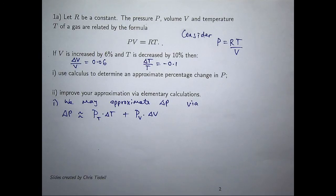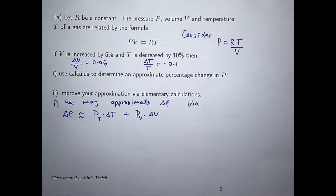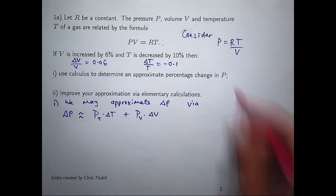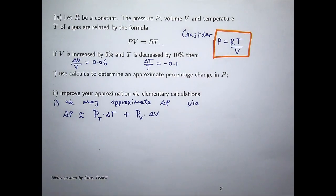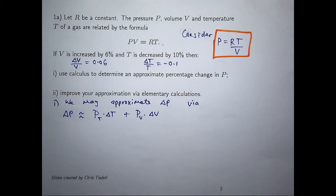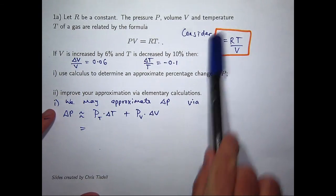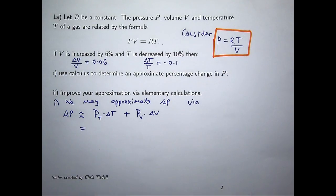By the subscripts I mean partial derivatives — p sub t is dp/dt, the partial derivative. We can calculate these partial derivatives from the formula. For dp/dt: r is a constant, imagine v is a constant, and differentiating normally gives dp/dt equals r over v.